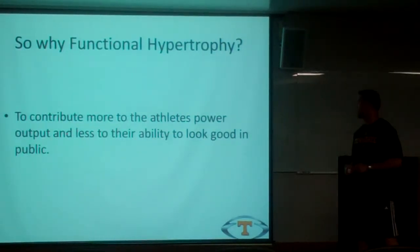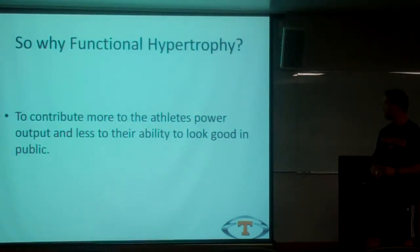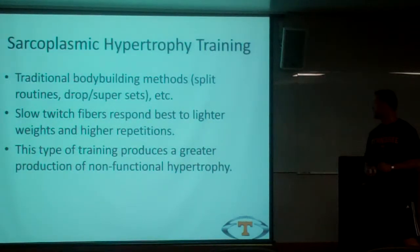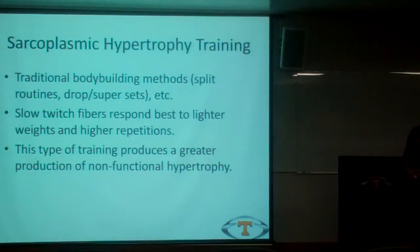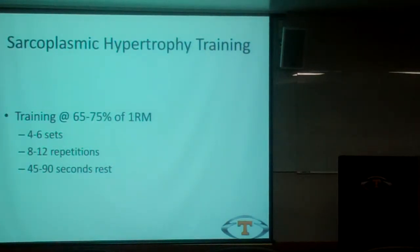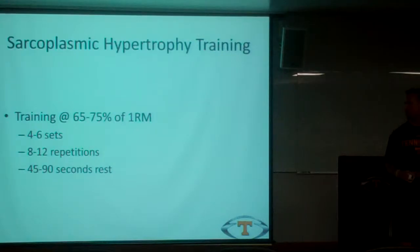So why do functional hypertrophy? Why focus on the sarcomere, trying to contribute more to the athlete's power and athletic capabilities? Traditional bodybuilding methods for sarcoplasmic, non-functional hypertrophy use splits and drop sets. Slow twitch responds better to light weight and high repetitions, producing more non-functional hypertrophy. An example program would be training at a lower percentage — 65 to 70 percent — 4 to 6 sets, the traditional 8 to 12 repetitions, and typically 45 to 90 seconds of rest.